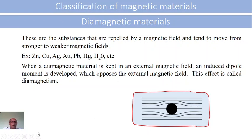First one is the diamagnetic materials. Diamagnetic materials are the magnetic materials which are repelled by the magnetic field and will always tend to move from a region of strong magnetic field to a region of weak magnetic field. In other words, they will tend to move away from the magnetic field, and that is how these diamagnetic materials behave.